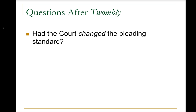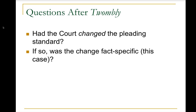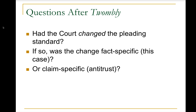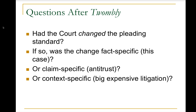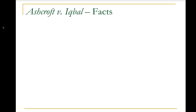Key questions after Twombly were: Had the court actually changed the pleading standard, or merely articulated it differently? If changed, was it fact-specific — applying only to this particular case? Was it claim-specific — applying only to antitrust cases, given that discovery in antitrust cases is particularly expensive? Or was it context-specific — applying to any big and expensive litigation? That same rationale about expense could support requiring something more in any costly discovery context.